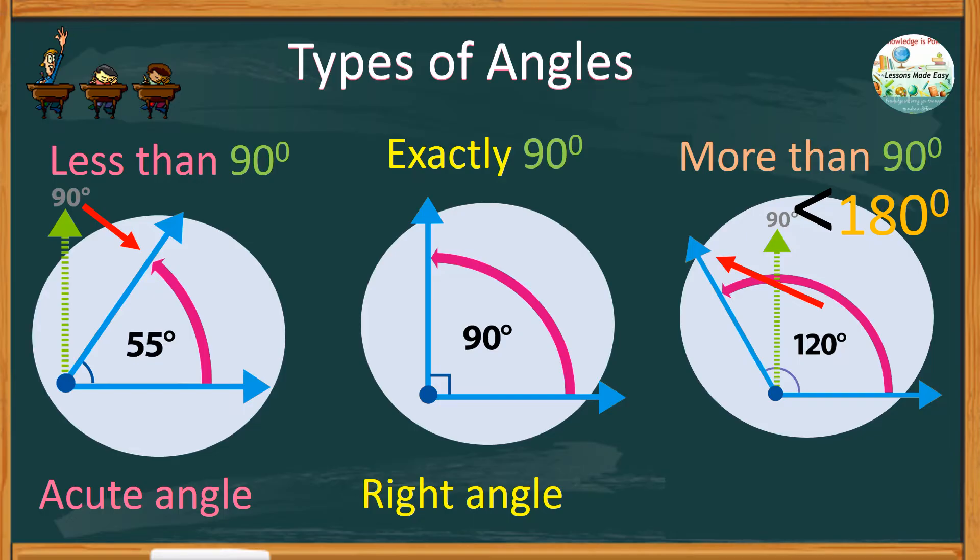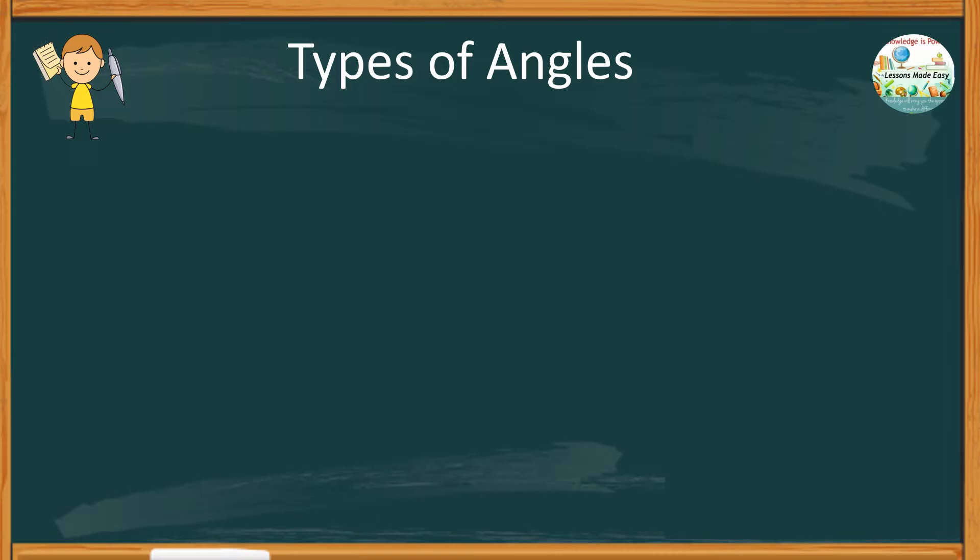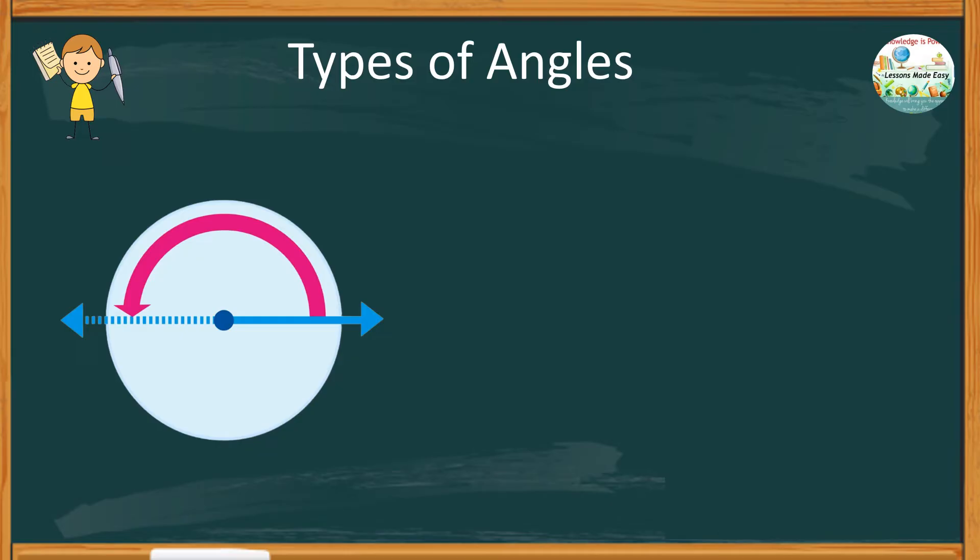Sometimes you can see angles forming a straight line, just like this one. And we call this a straight angle.